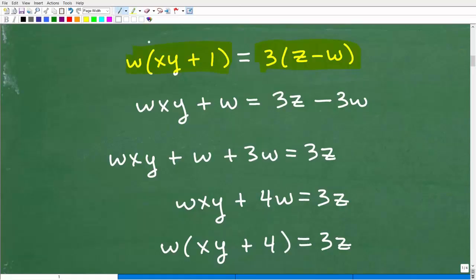Now we have really no choice but to use the distributive property. And you've got to take this step and that way we can kind of see what terms we're working with. So w times xy, wxy, w times 1, w, 3 times z, 3z, and 3 times w, 3w. All right.